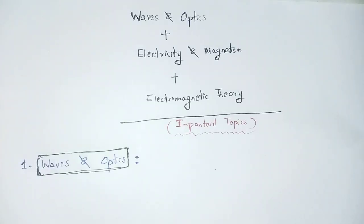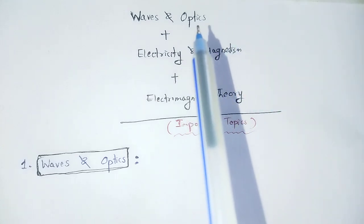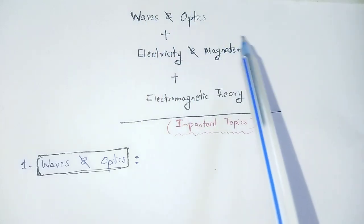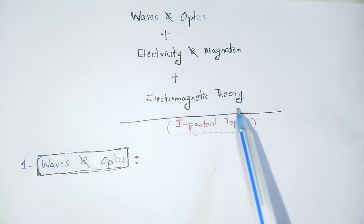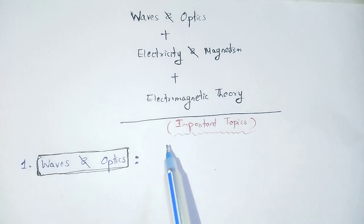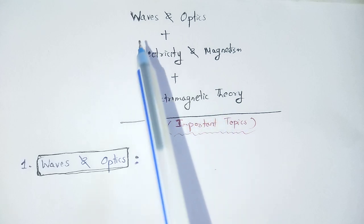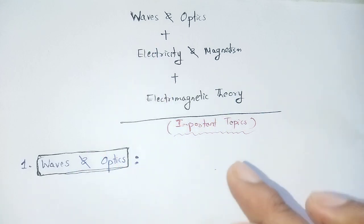Hello students, good time to all. I am Chandan Kumar Pradhan, welcome to your channel Chandan Physics. In this video we are going to discuss the important topics of three core papers: Waves and Optics, Electricity and Magnetism, and Electromagnetic Theory for CPT Physics 2025. Here is a schematic representation of the important topics for each core paper.